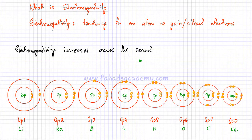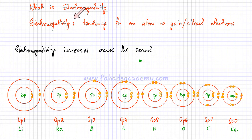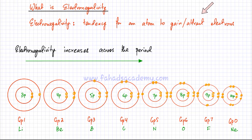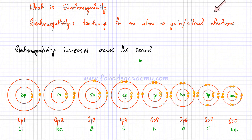In this lecture, we're going to discuss what is the meaning of the term electronegativity. Electronegativity is the tendency for an atom to gain or attract electrons. You've already been familiar with group 1 metals losing electrons and non-metals gaining electrons. For example, fluorine makes a minus 1 ion — it has a tendency to gain electrons.